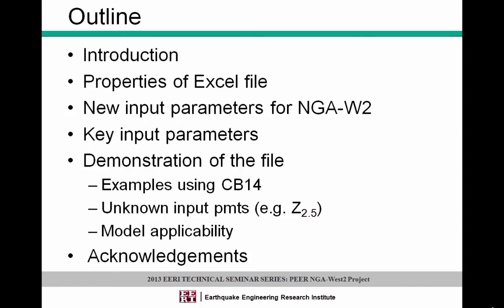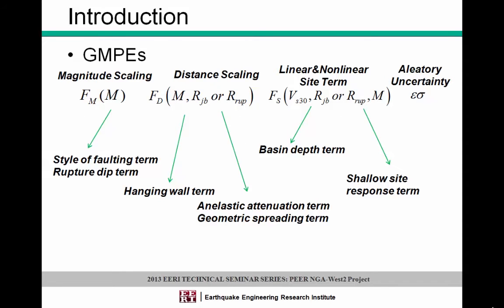GMPEs are the ground motion prediction equations that estimate or give the median predictions of intensity measures (IMs) for given magnitude, site-to-source distance, fault mechanism, and site conditions. Although some GMPEs have different terms in their models, basically if you have the magnitude scaling, the style of faulting, the distance scaling, and the site terms in your model, you will have the basic GMPE.